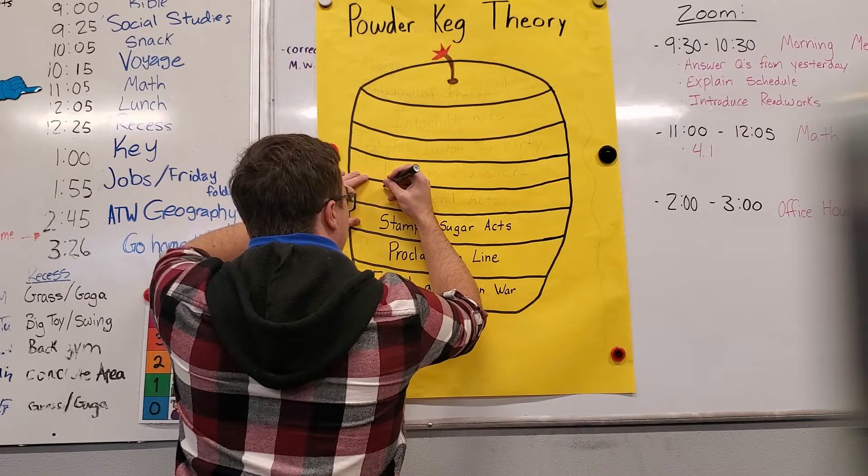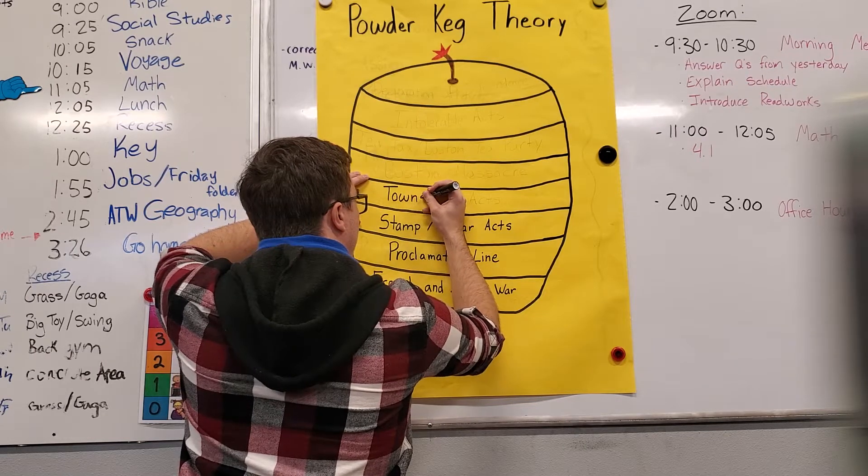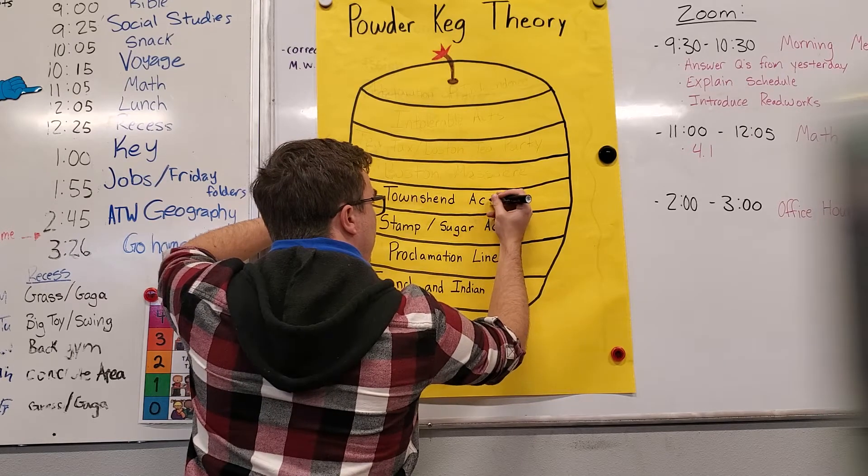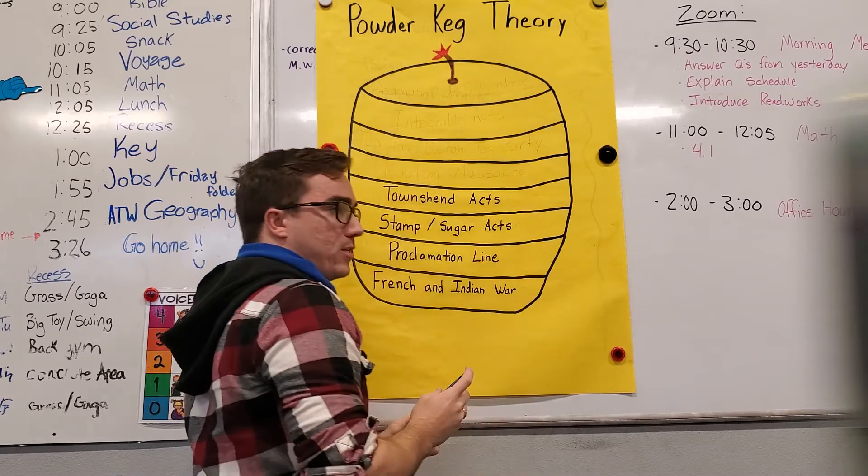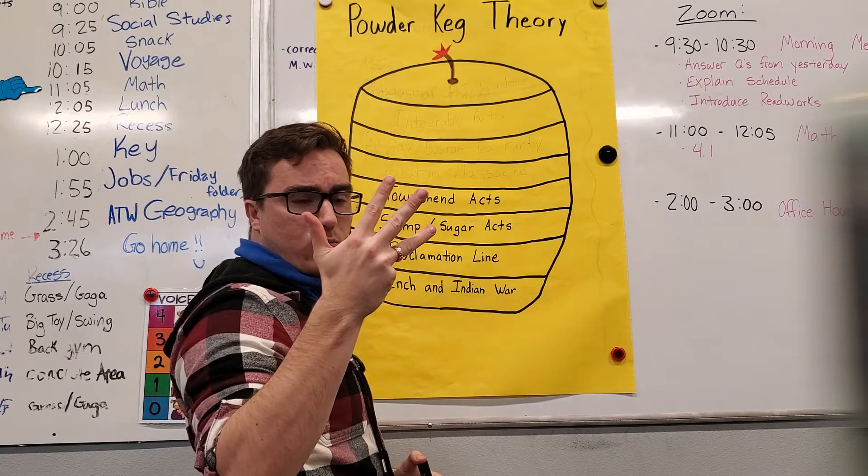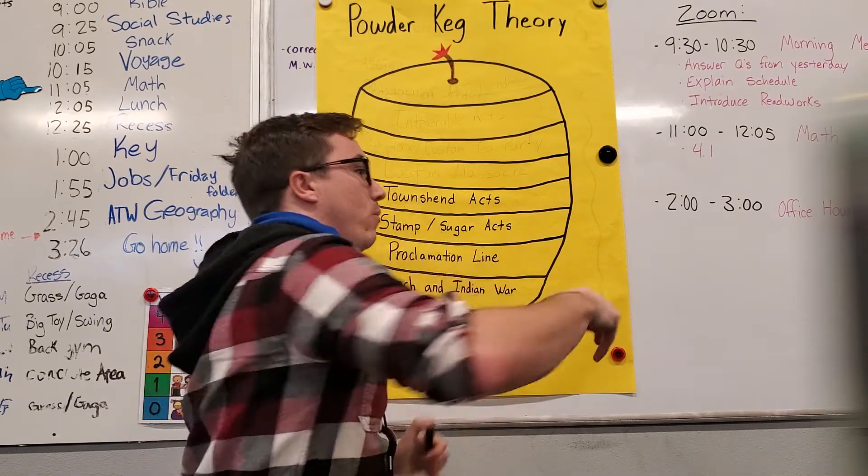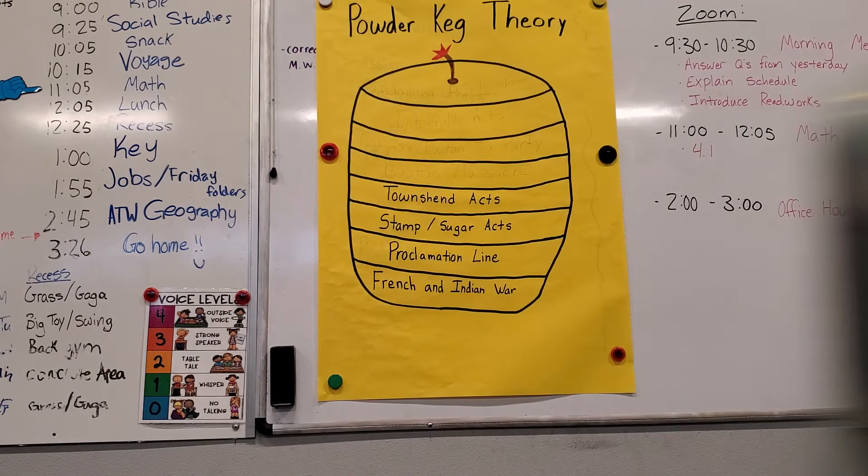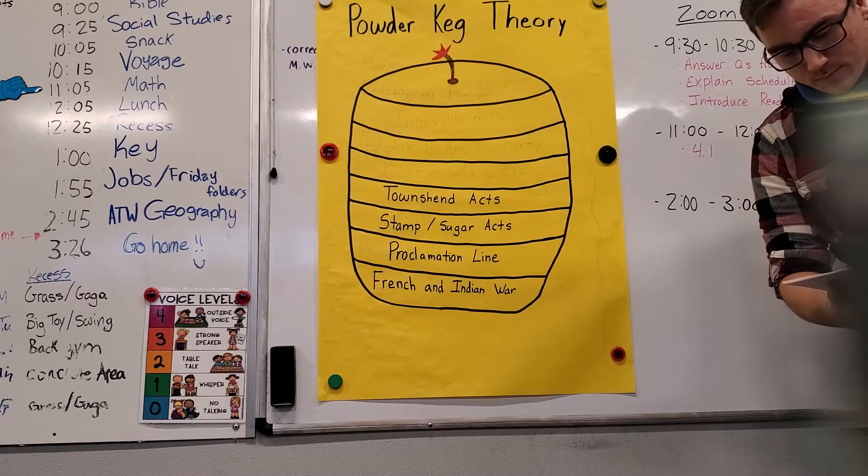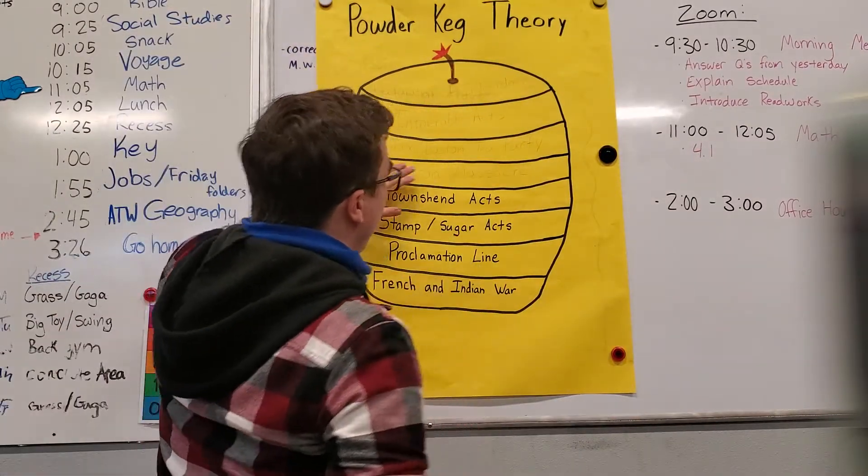The next thing was the Townshend Acts. And the Townshend Acts put a tax on lead, paint, glass, tea, paint, and paper. I can't remember off the top of my head. What was it? Oh, I just gotta look real quick. Oh, I was right. Okay.